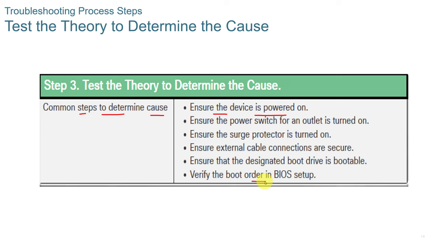A recent personal example: we'd just purchased a new computer that kept powering off. We thought something was wrong with the computer itself. After going through the process and checking the simple things first, we replaced the power strip — and that was the problem. It was an older power strip that we should have replaced when we got the new computer.